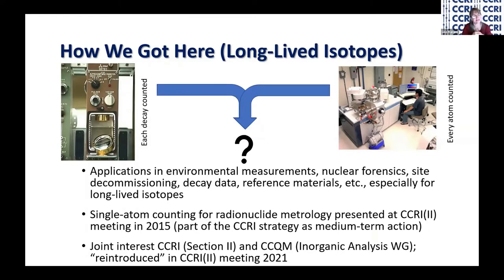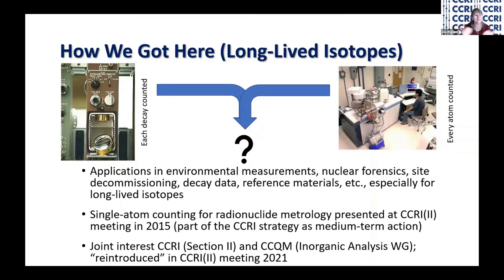Back in 2015, at a CCRI Section 2 meeting, we had a presentation on something called single atom counting — the idea of counting atom by atom. In radioactivity, we count decays, and the probability is that a decay is coming from an atom. If you know how many atoms you have, each one will have a probability of decaying, so how do we join these two bits of information to get a valid value and its uncertainties? It became clear there was a joint interest between Section 2 of CCRI and CCQM, specifically the Inorganic Analysis Working Group, to further pursue this idea.